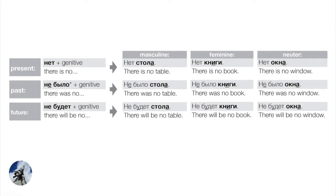Let's compare the existence and non-existence tables. The formula for expressing non-existence in the present tense is нет plus the genitive — that's all there is to it. Нет стола, нет книги, нет окна. These things don't exist. There is no table. There is no book. There is no window.